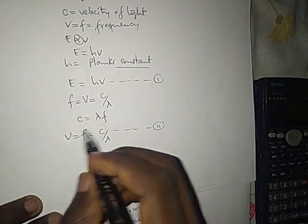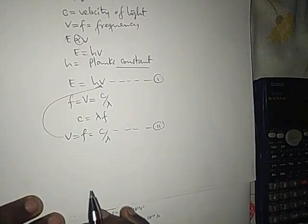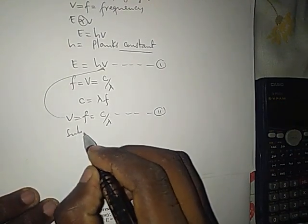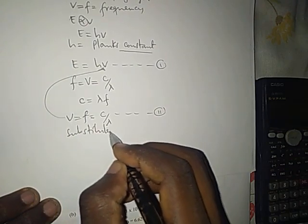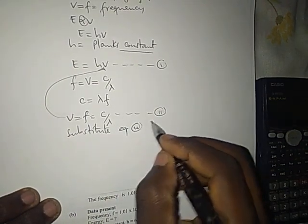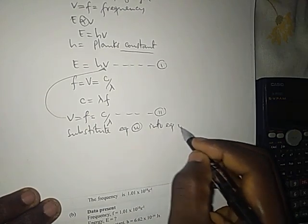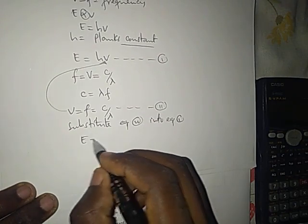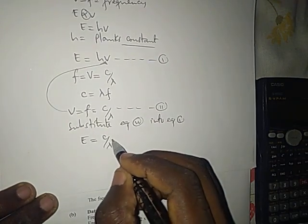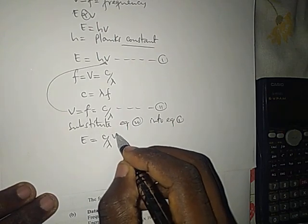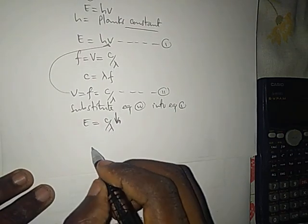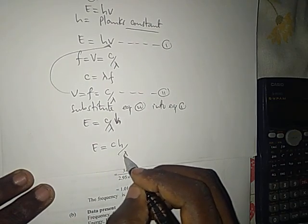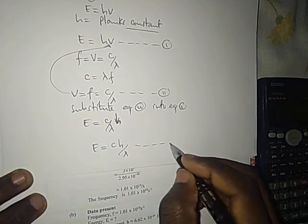Now substitute equation two into equation one. You get E is equal to H times C divided by wavelength. So E is equal to HC divided by wavelength. Let's call this equation three.